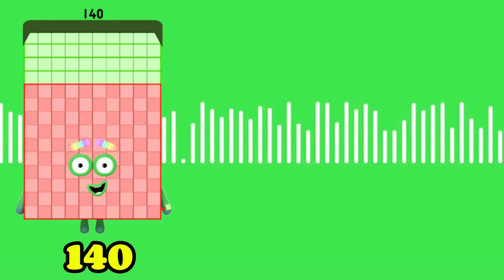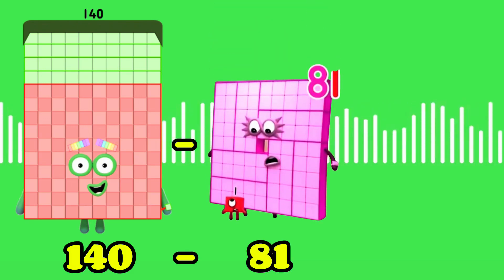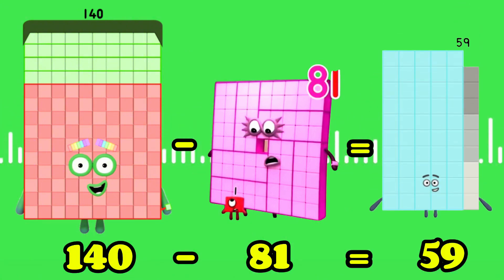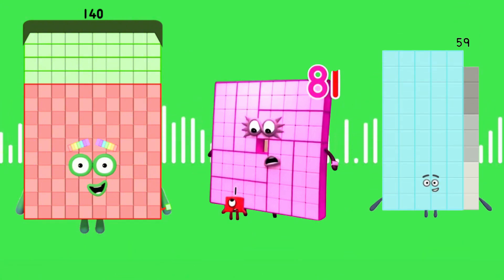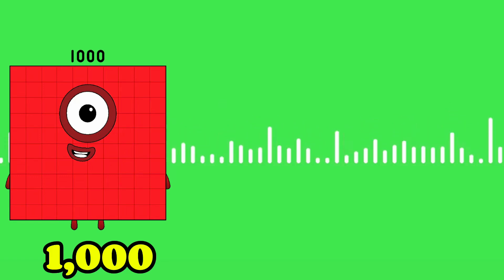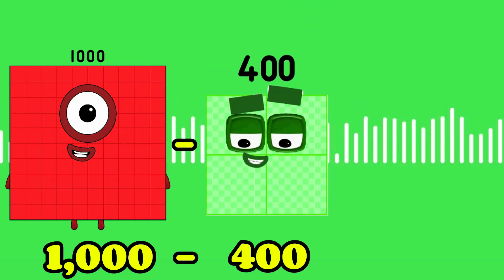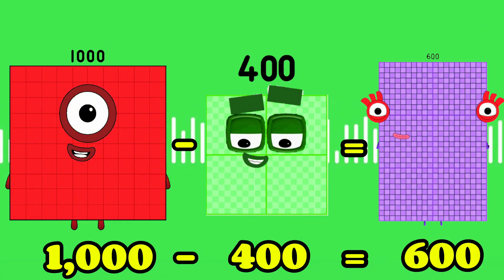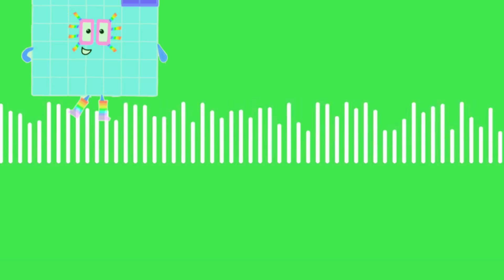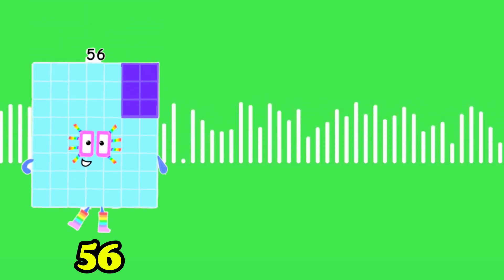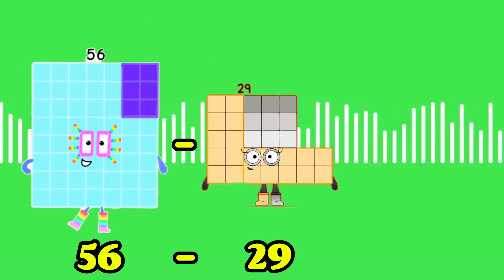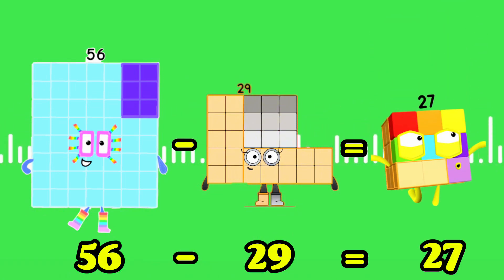140 minus 81 equals 59. 1,000 minus 400 equals 600. 56 minus 29 equals 27.